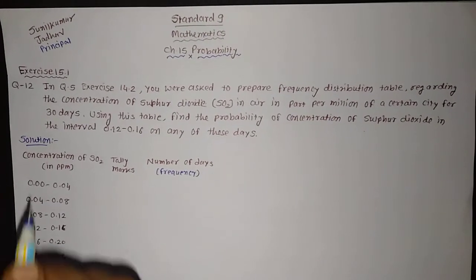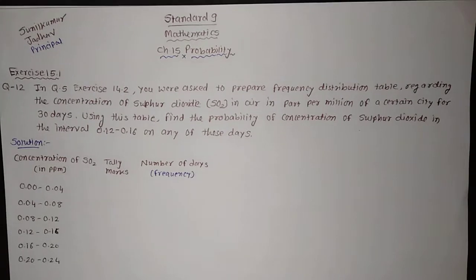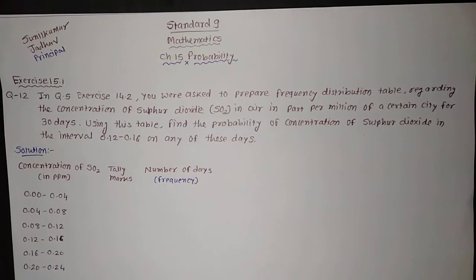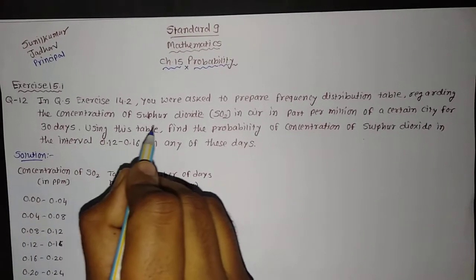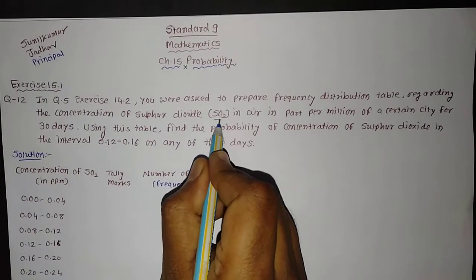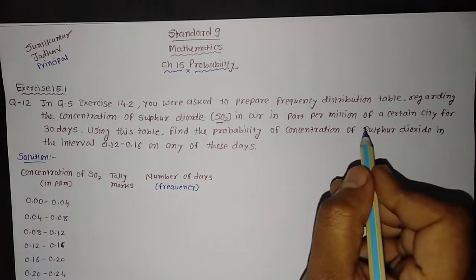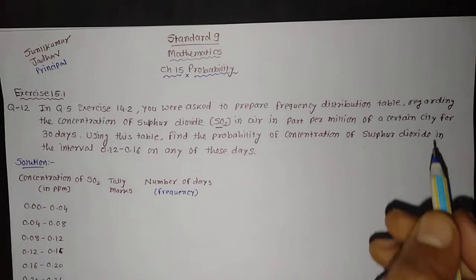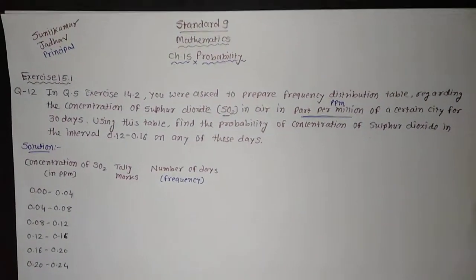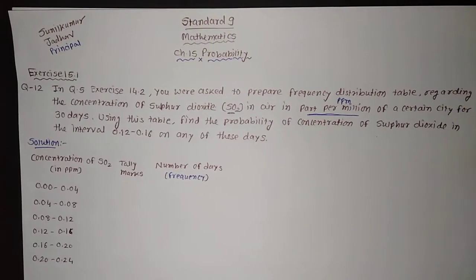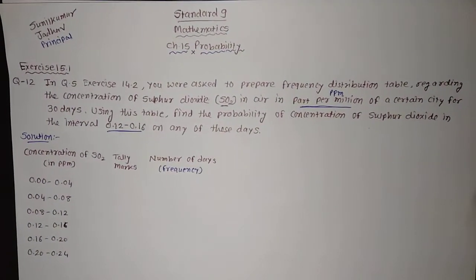First of all let us try to read the question. In Question No. 5 of Exercise 14.2 — that means we need to refer the NCERT textbook — we need to see Question No. 5 of Exercise 14.2 and on the basis of that we need to solve this particular sum. You are asked to prepare a frequency distribution table regarding the concentration of Sulphur Dioxide (SO2) in air in parts per million (PPM) of a certain city for 30 days. Using this table, find the probability of concentration of Sulphur Dioxide in the interval 0.12 to 0.16 on any of these days.